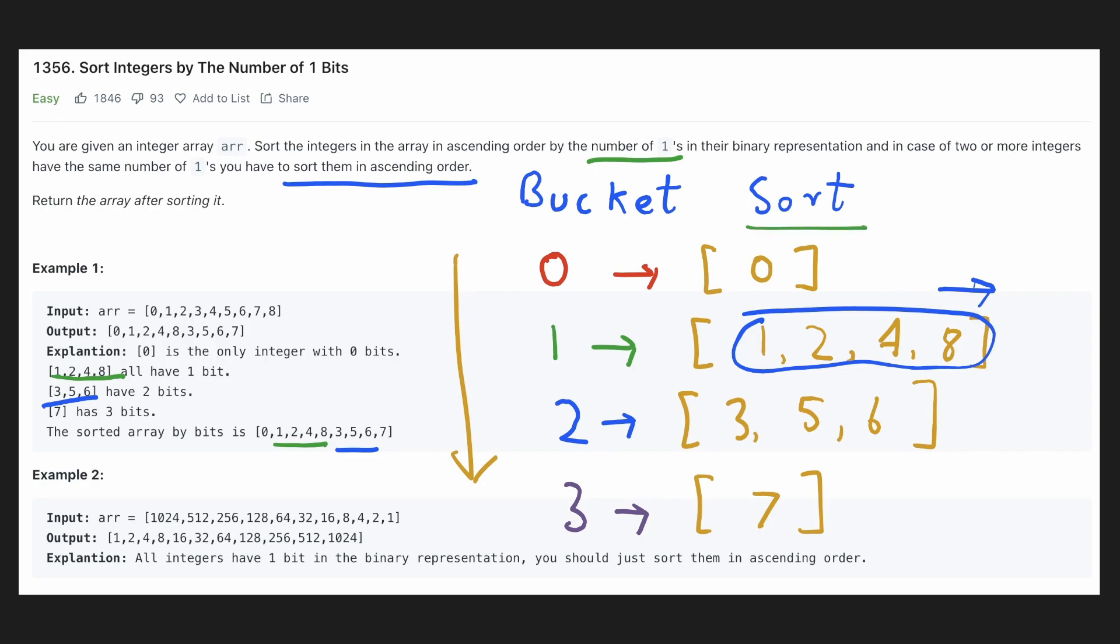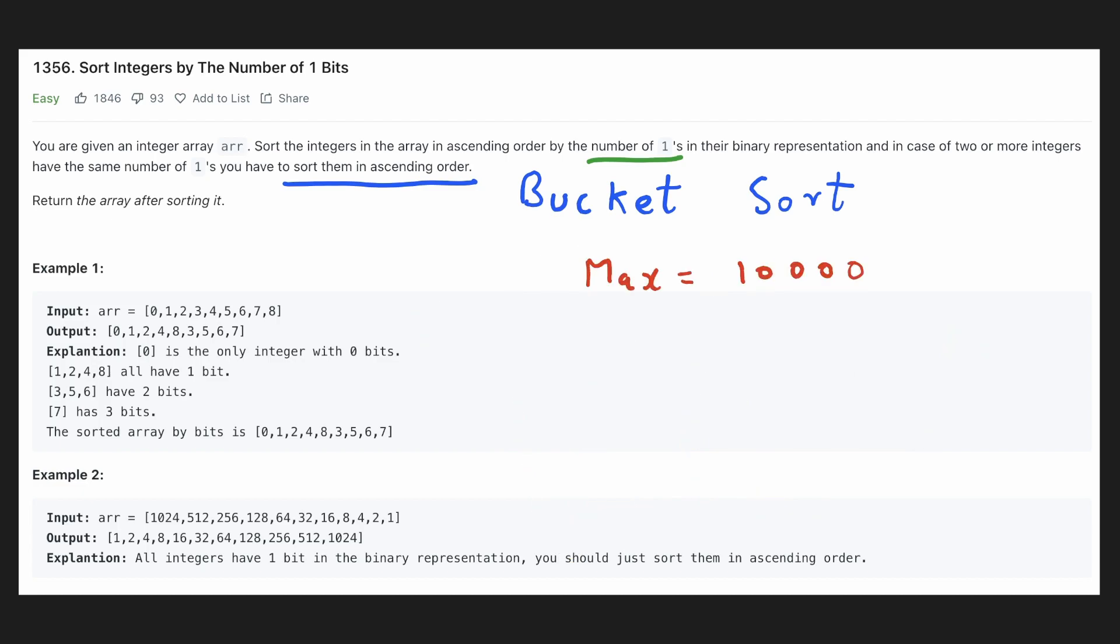It is also given in the problem that if there are multiple values in the same bucket, we have to sort them in increasing order. Hence, this is why this algorithm is called as bucket sort. Because once we have our individual buckets, we have to sort them. One final question you might have is how do we know how many buckets we have to create? We know that we have to start from bucket 0, but how do we determine the upper bound? It is given in the problem that the maximum value can only be 10,000. But let's try to see how many buckets we might need if the maximum value could have been 1 billion.